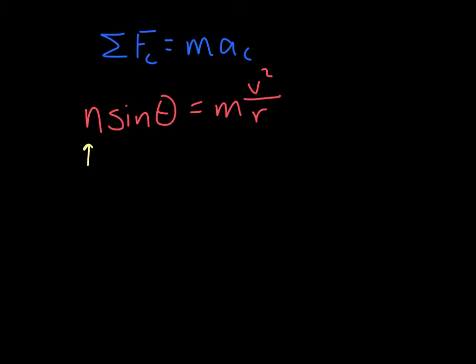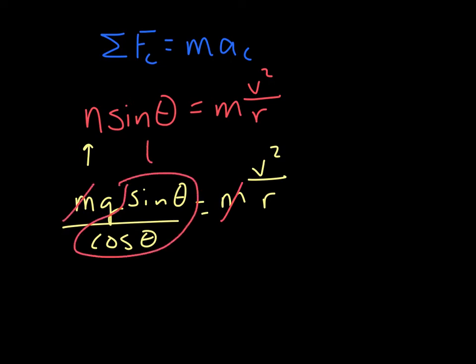So plugging in for n, your next row you're going to get mg over cosine theta, sine theta equals m v squared over r. These m's cancel out, and we're going to use that sine over cosine is tangent theta. So you get g times tangent theta equals v squared over r.